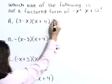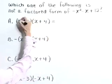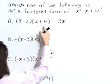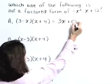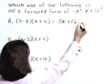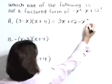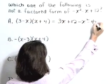Starting with a and foiling, we get 3x. Outer product is plus 12. Inner product is minus x squared. Last product is minus 4x.